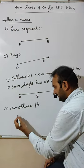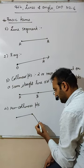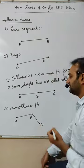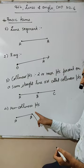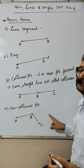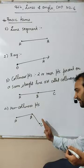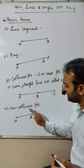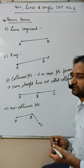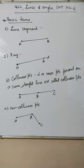Non-collinear points — this is something non-collinear: all three points are not on the same straight line. So this is something which is non-collinear. Okay, clear to here?